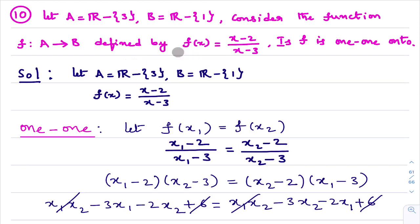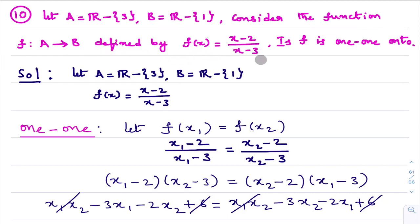This is exercise number 1.2, question number 10. What is the given information? They have given set A equal to all real numbers except 3, and set B as all real numbers except 1. Consider the function f from A to B, defined as f(x) equal to x minus 2 divided by x minus 3.